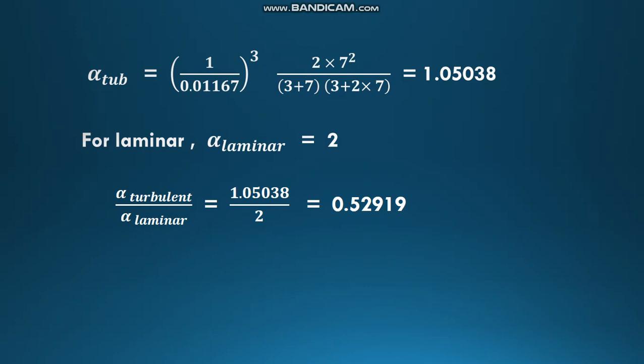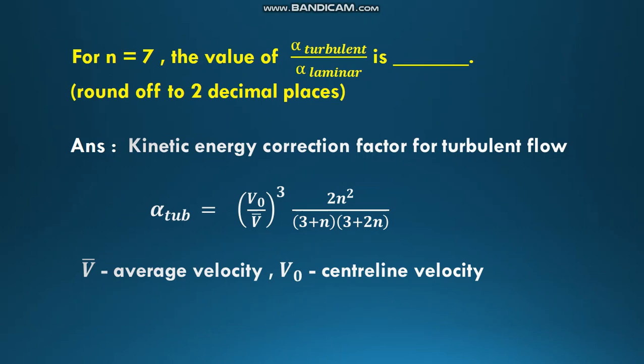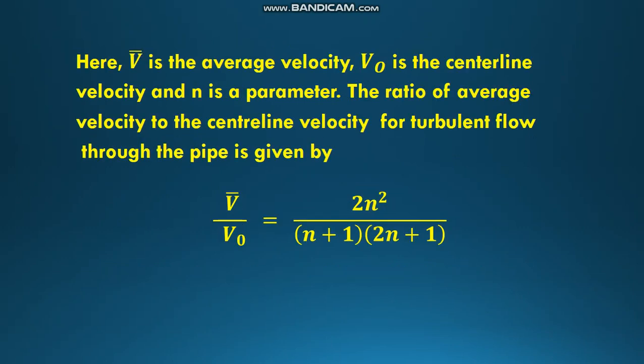Approximately 0.53. This is the value of α_turbulent/α_laminar.